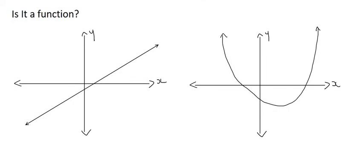All you do is you draw a few vertical lines downwards and you see how many times those vertical lines cut the graph. This vertical line only cuts once, this vertical line cuts once, and this vertical line cuts once. If it only cuts once, then it's a function.